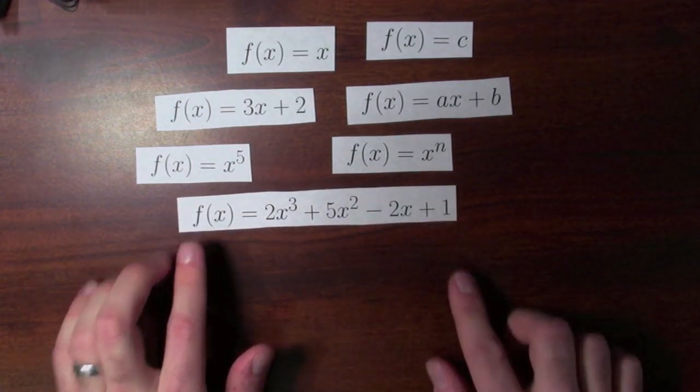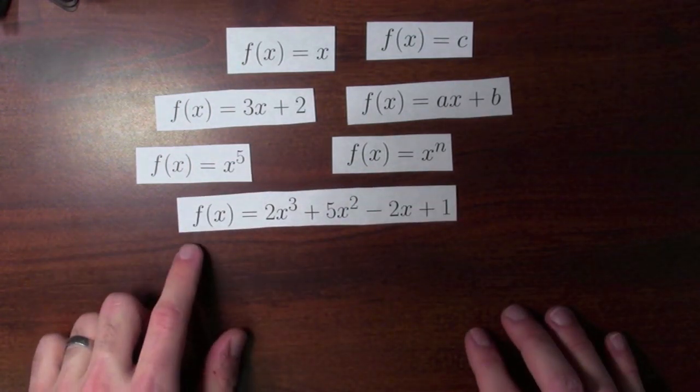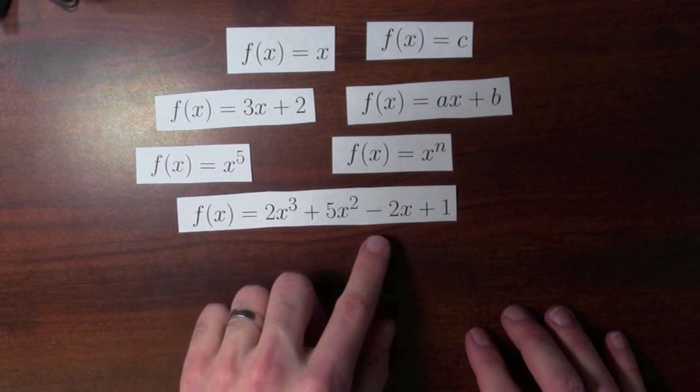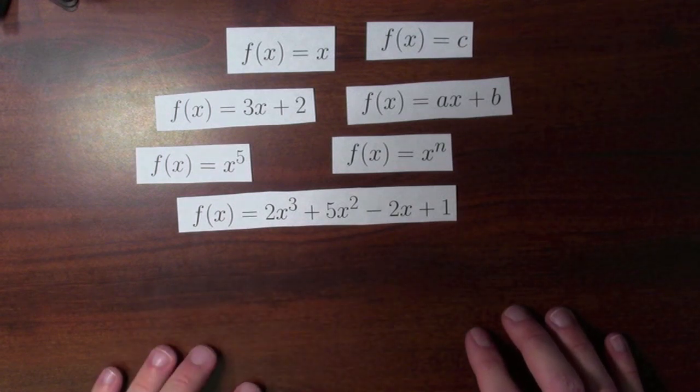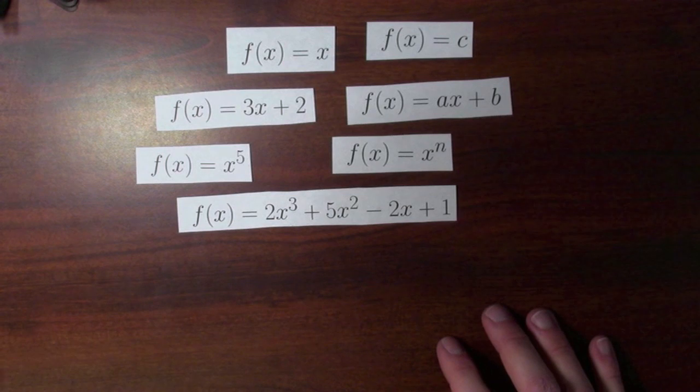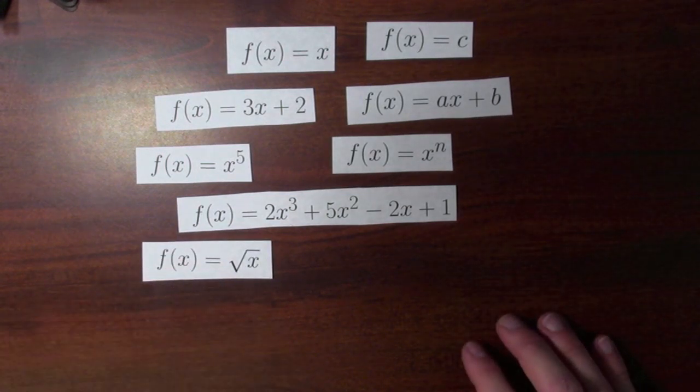Think about polynomials, like this complicated looking polynomial: f of x equals 2x cubed plus 5x squared minus 2x plus 1. If you're thinking about polynomials, you might want to think about roots. f of x equals, say, the square root of x.